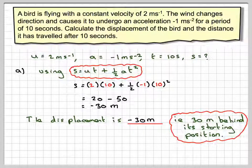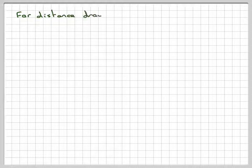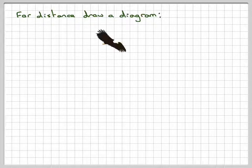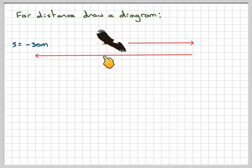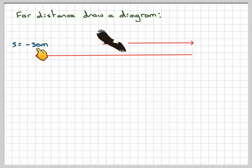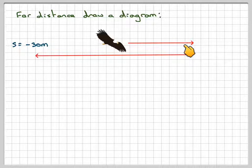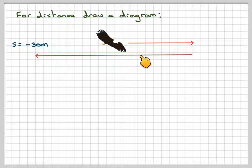Now, for the distance, we have to be a little bit more careful. We need to draw a diagram. So we've got our bird here. What's going to happen? It's going to move forward, and then it's going to move back. So then S is equal to minus 30 metres. So the wind's acting against it up to this point, and then it will momentarily be 0. And then the acceleration will take it going backwards.